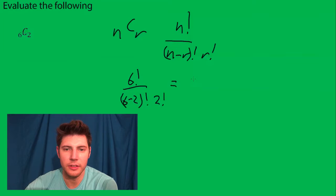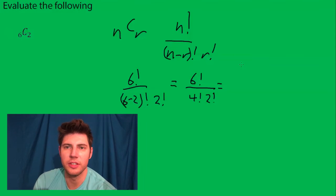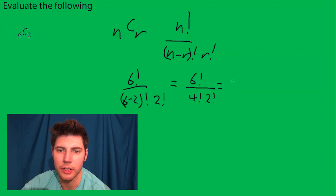You can simplify that. So the way a six factorial works is it's six times five times four times three times two times one. So I'll show you the trick on how to do these.